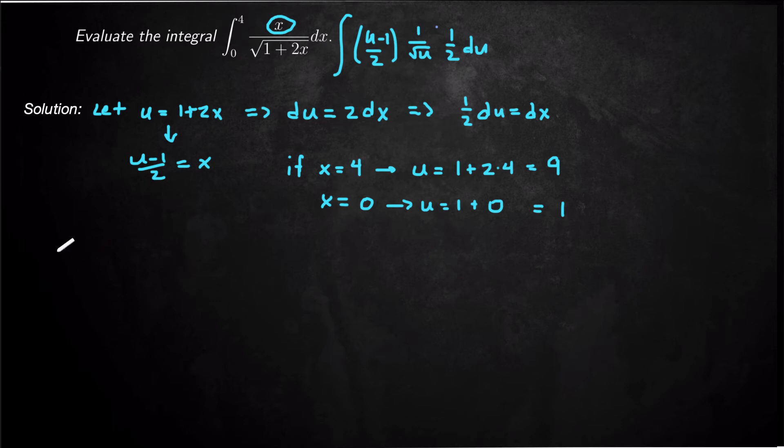So my integral should be integral from 1 to 9, u minus 1 over 2, 1 over square root of u, and then 1 half du.